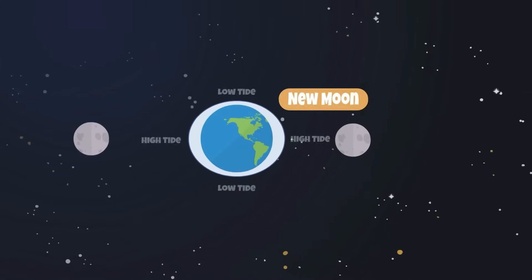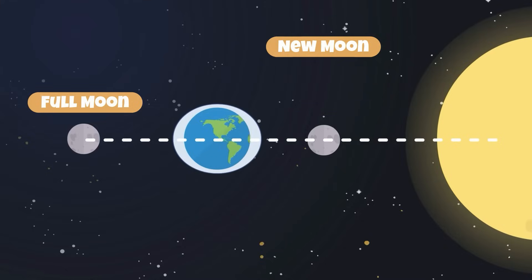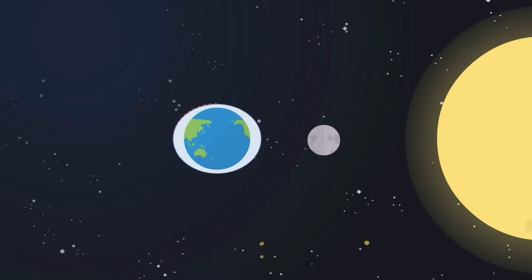In both a new and a full moon, there is an alignment of the sun and the moon to the Earth, creating a combined gravitational pull. This combined pull causes the water in the Earth to bulge more than usual, causing higher tides, or what are known as spring tides.